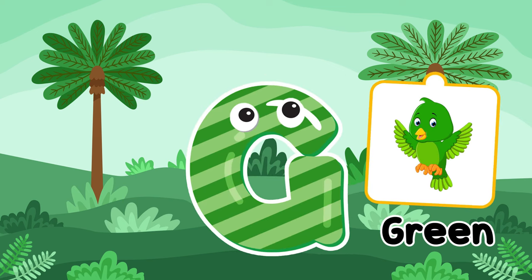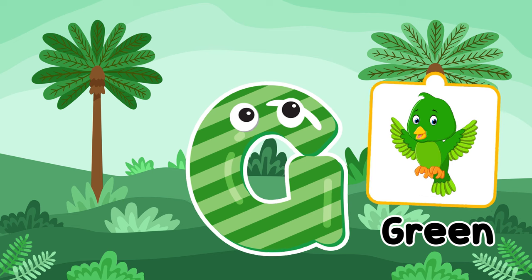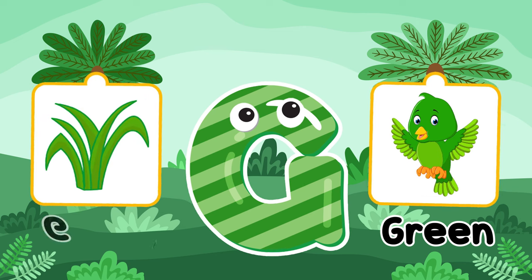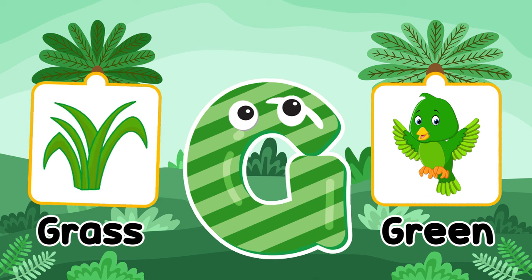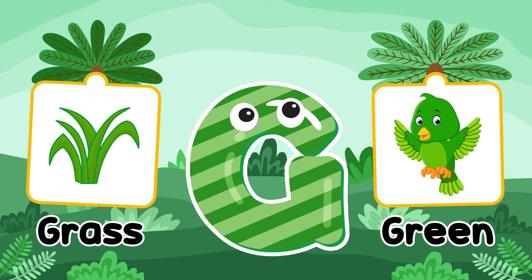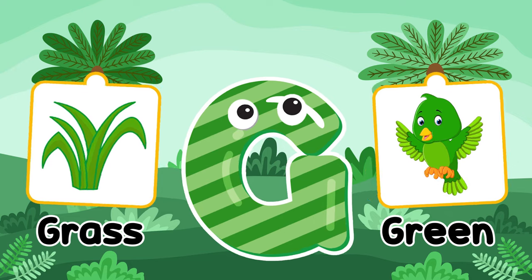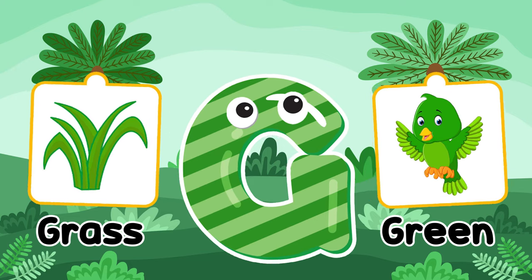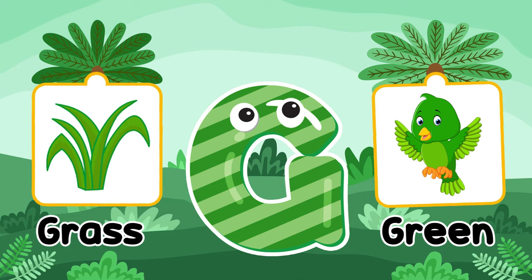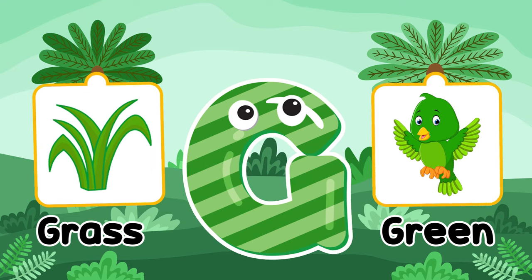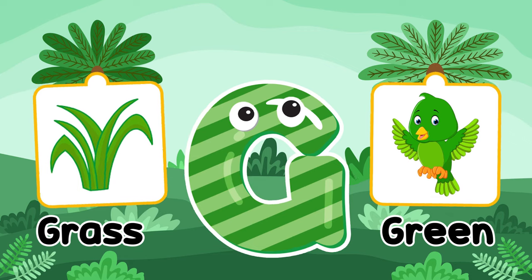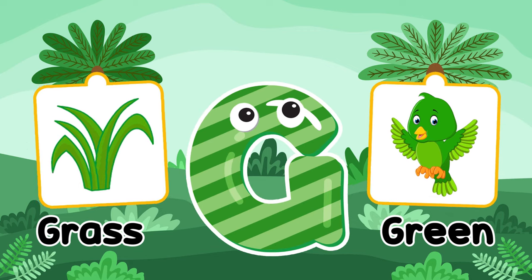F is for flower. G is for green. G is for grass. G is for green. G is for grass.